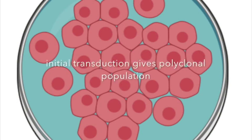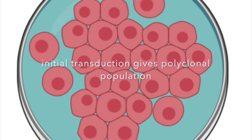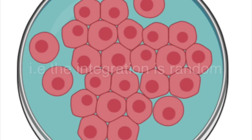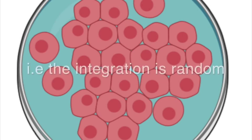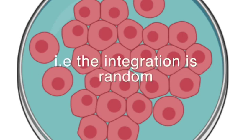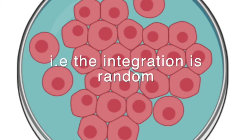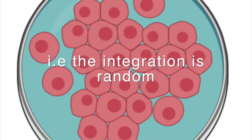The initial transduction results in a polyclonal cell population where the integration varies from cell to cell because the integration event is random. You will also see different numbers of integration events from one cell to the next, particularly if the multiplicity of infection is greater than one.